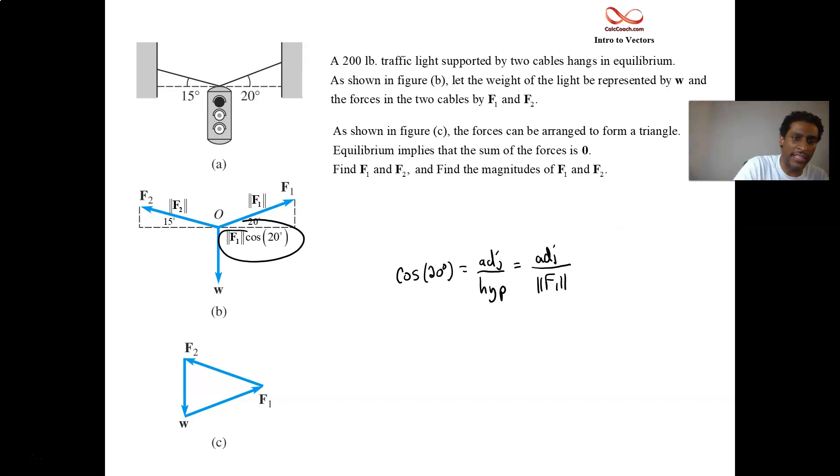The upright side, the J component of that vector, is mag F1 sine of 20 degrees. So we have the I and J components of F1.